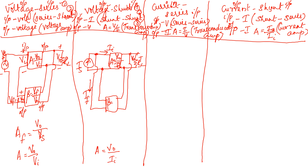For the beta of voltage shunt feedback: V0 becomes the input and the output is current IF. So IF equals beta times V0. The gain with feedback equals V0 divided by the overall source current IS.